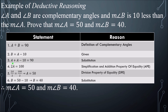Simplifying: 2A minus 10 equals 90, and adding 10 to both sides gives 2A equals 100, using the addition property of equality. Dividing both sides by 2, we get A equals 50, so the measure of angle A is 50. To get B, we substitute 50 into B equals A minus 10: B equals 50 minus 10, so B equals 40. Therefore, the measure of angle A is equal to 50 and the measure of angle B is equal to 40.